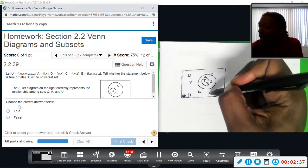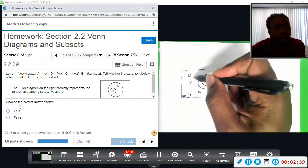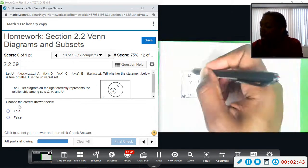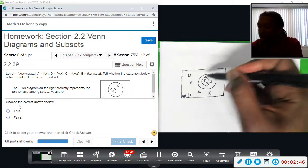So all of those letters are in the universal set: u, v, w, y, t, u, v, w, x, y, z. Okay, so everything is in U. C is in here and A is in here.